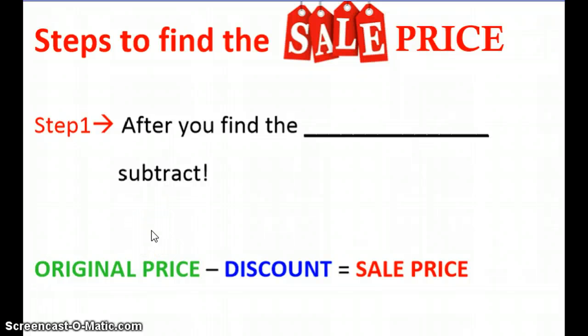Steps to finding the sale price. If you understood how to get the discount, it is going to be easy because we're just adding that one more step for the sale price. So step one, after you find the discount you're going to subtract. You're going to take the original price, subtract the discount which we just saw in the previous slide, to get the sale price or the new price after the discount has been taken off.